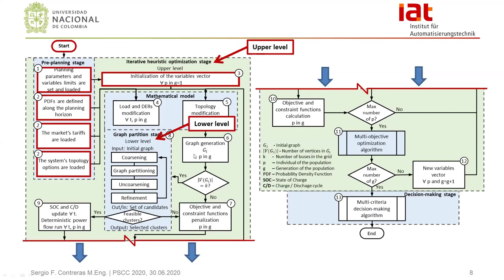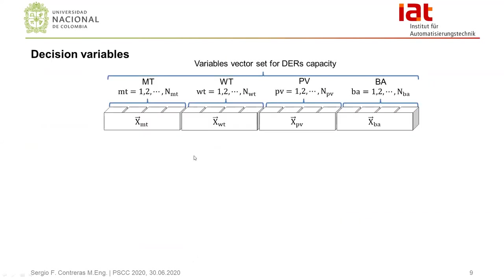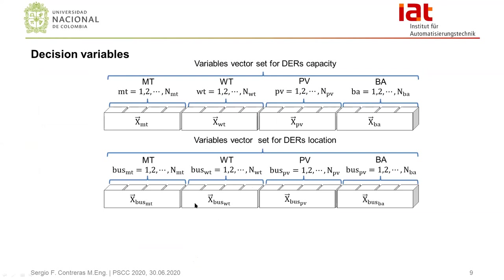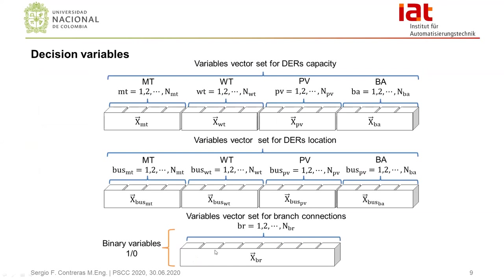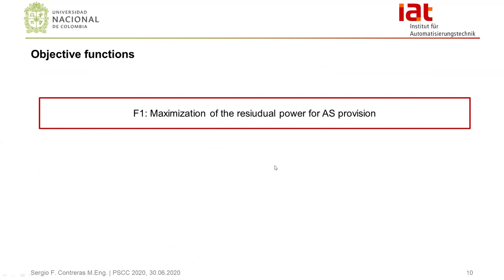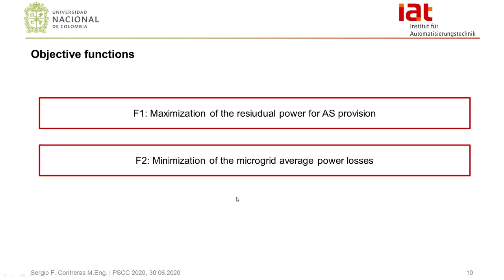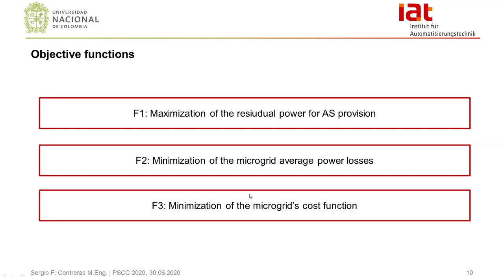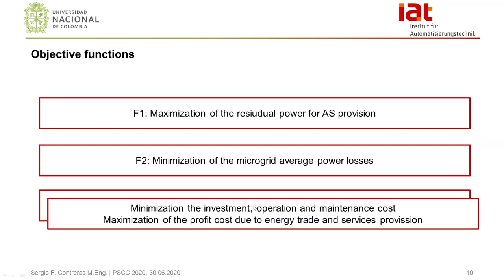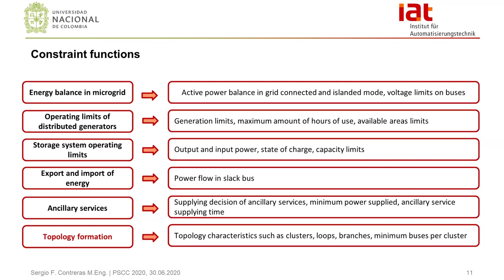For the POM2 methodology, the decision variable vector is defined as: a vector set for the capacity of distributed energy resources, a vector set for the location of distributed energy resources, and a binary vector set for the selection of lines in the microgrid. The objective functions are the maximization of signal power for ancillary services provision, the minimization of the microgrid average power losses, and the minimization of the microgrid cost functions — which minimizes investment, operation and maintenance costs, and maximizes revenue streams for electricity export and ancillary services provision. Additionally, six different groups of constraint functions are defined, where, for example, the energy balance and ancillary services provision conditions are constrained in the optimization problem.